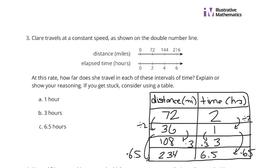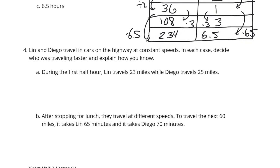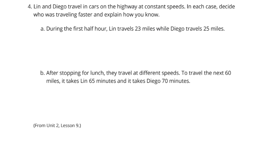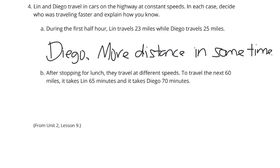Question 4. Lynn and Diego travel in cars on the highway at constant speeds. In each case, decide who was traveling faster and explain how you know. During the first half hour, Lynn travels 23 miles, while Diego travels 25 miles. Diego went faster. How do we know? More distance in the same time. Don't really even have to break that down since we're dealing with 30 minutes.